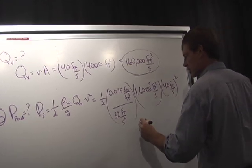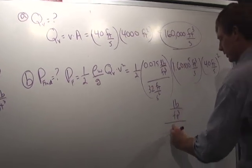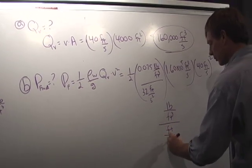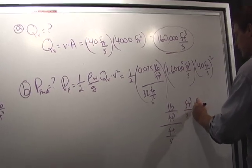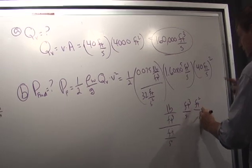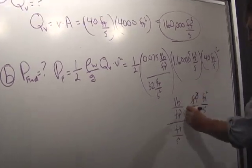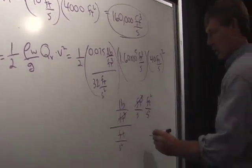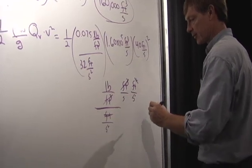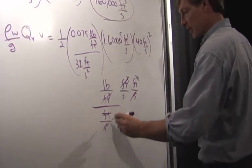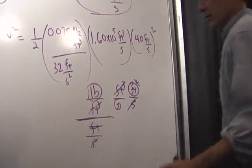Now, for the units, I'm going to have pounds over feet cubed, over feet over seconds squared, times feet cubed per second, times feet squared per second squared. So let's see. Cubic feet, cubic feet are gone. I got one foot, two feet up here and one foot down there. So I have one foot left. I got one over second squared, one over second squared. I'm going to have foot pounds per second, which is a unit of power. That's good.